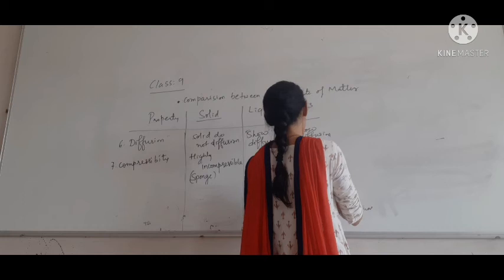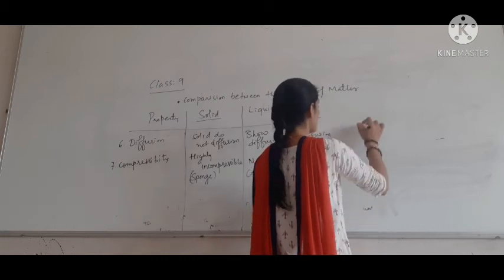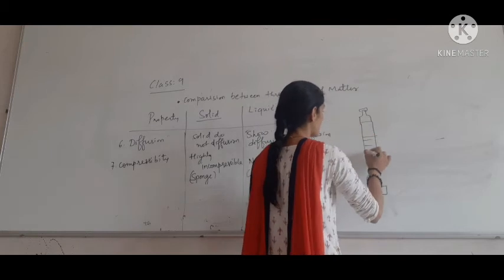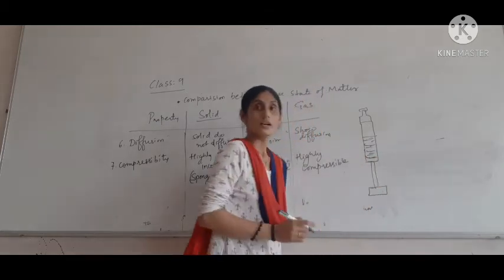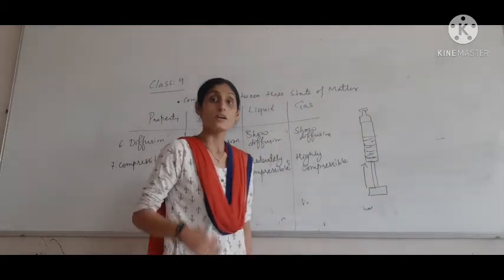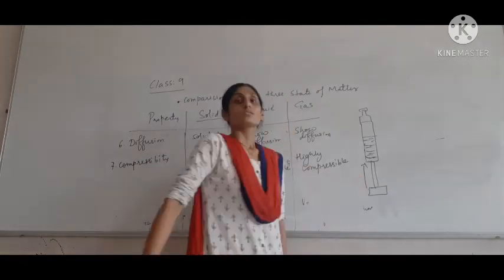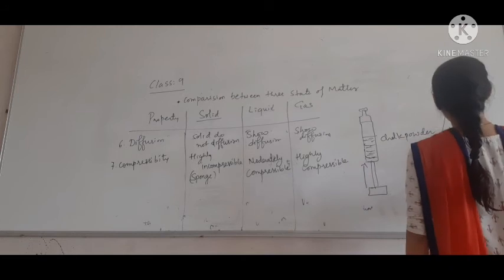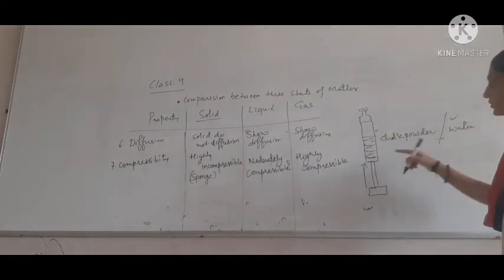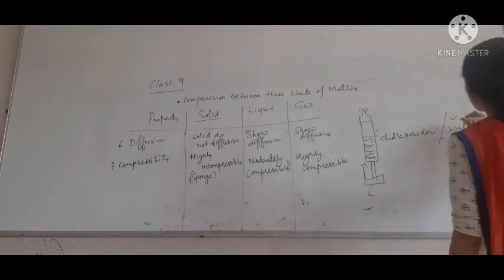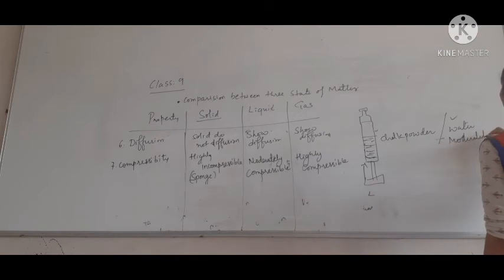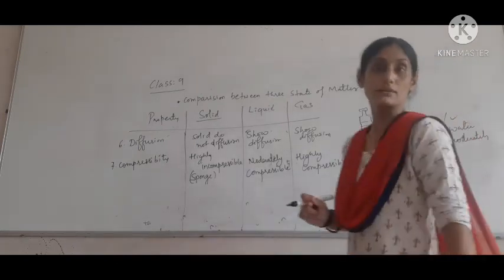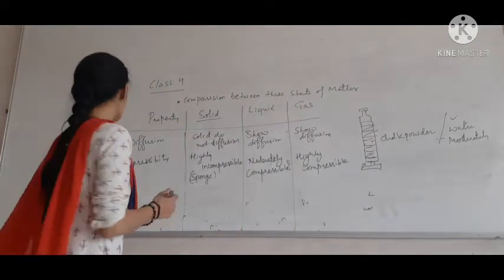An activity using a syringe is given in your textbook. The lower part is the piston fitted with a rubber pump. If we fill chalk powder inside and apply pressure, there is no change in the level of the piston — showing solids are incompressible. If we fill water instead, the piston level changes somewhat — showing liquids are moderately compressible. With gas inside, it is highly compressible.